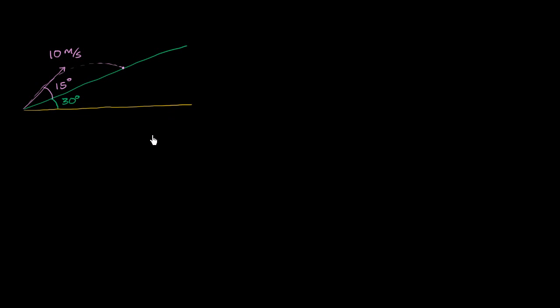The first thing we always want to do is break up our velocity into horizontal and vertical components. The vertical component of our velocity is going to be the magnitude of our total velocity — 10 meters per second — times the sine of the angle with the horizontal. So times the sine of 45 degrees, not the sine of 15 degrees.